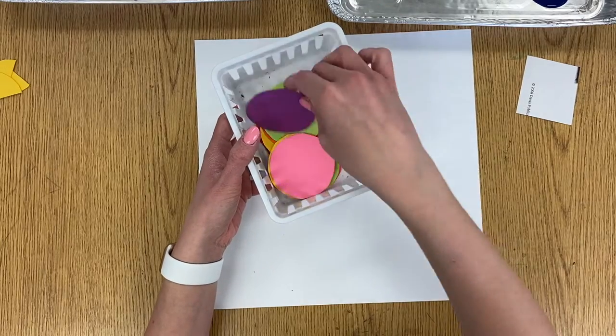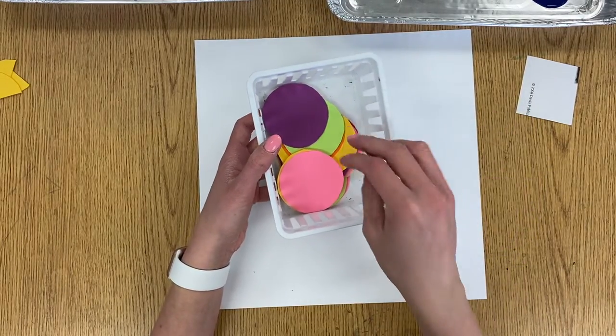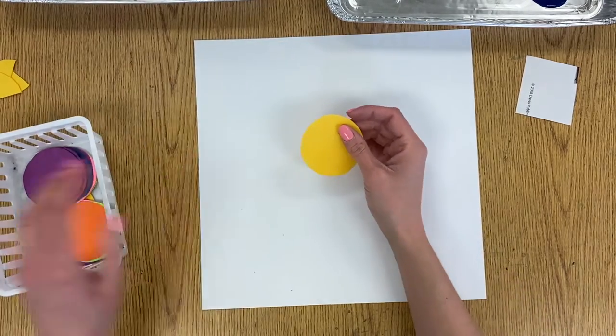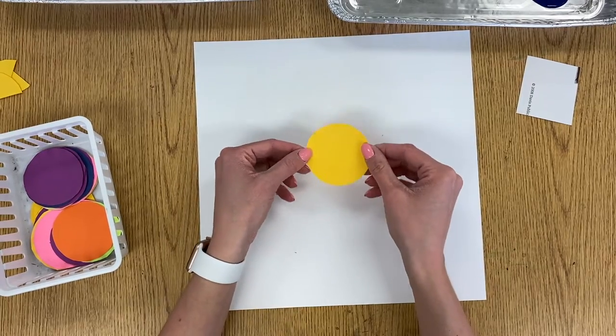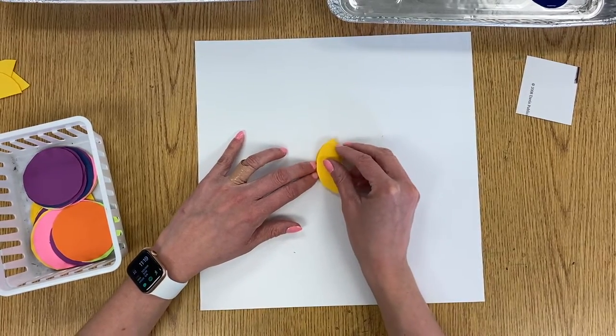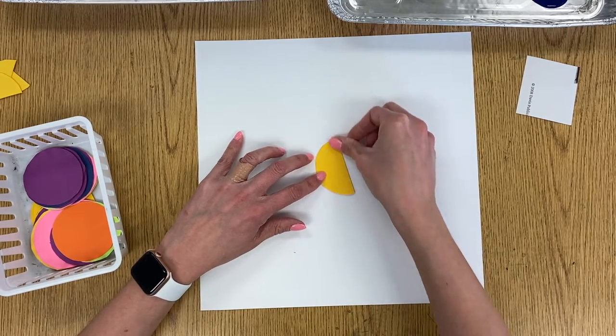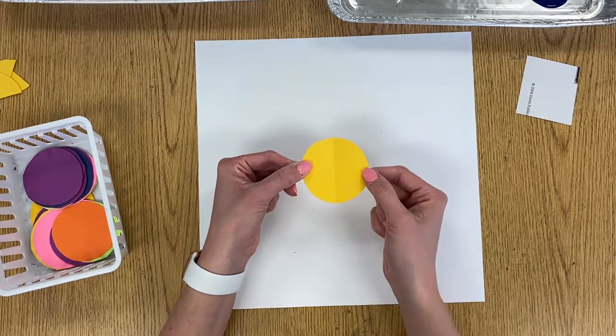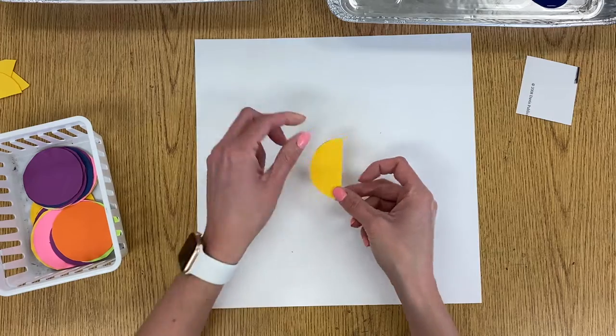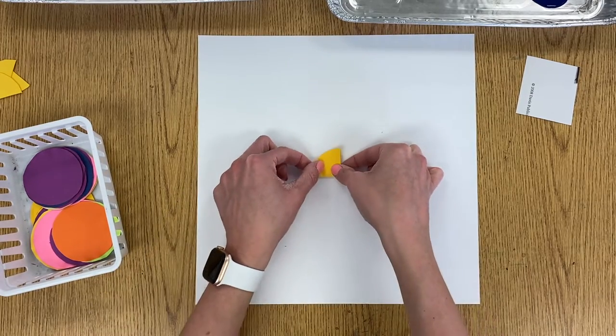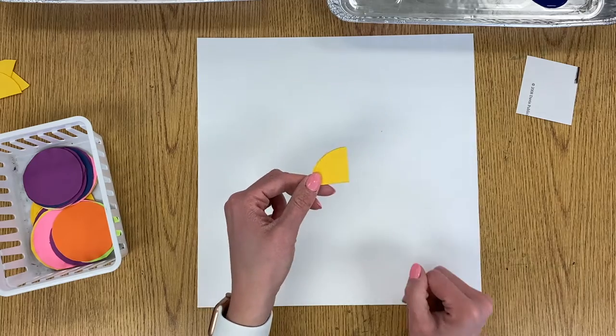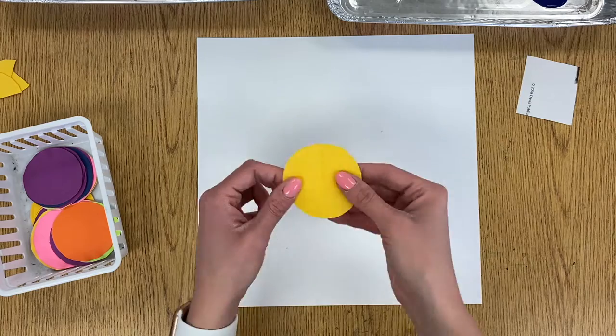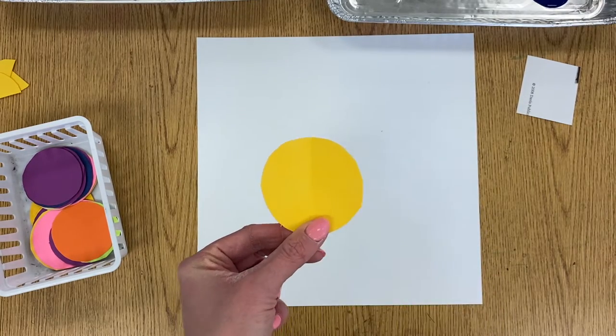So the first thing we're going to do is take a circle. You're going to choose either hot color or a cold color from these circles that I already cut out for you, and we're going to cut this into four equal pieces or fourths. To do that, I'm going to fold my circle in half. When I open this up right now I have two halves, but I need four, so I'm going to keep it folded and then fold it in half again so it makes a little pie shape.